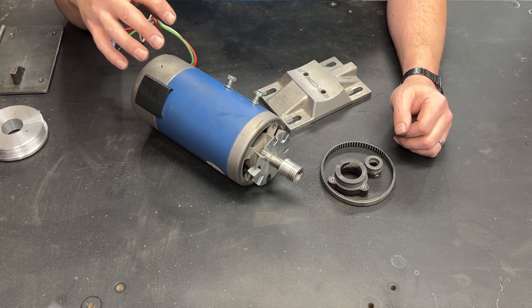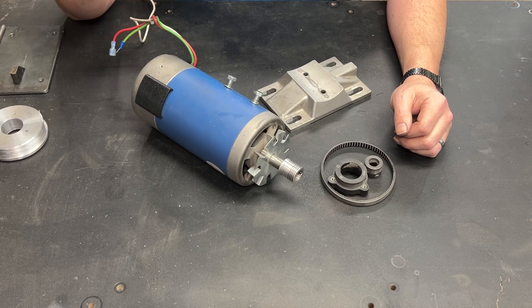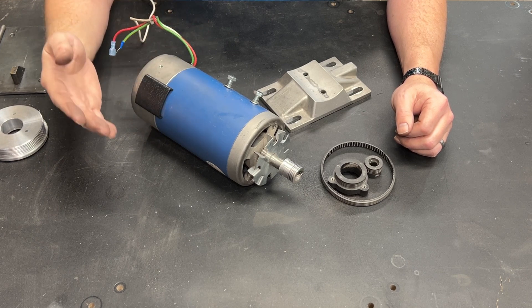You are far better off taking the max RPM on the motor, dividing it by the RPM that you are trying to get, and then using that as your gear ratio.